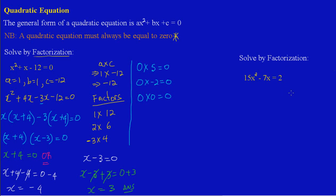Let's get into this question. We have 15x squared minus 7x equal to 2. If you note carefully, this is a quadratic equation because the highest power of the variable is 2. However, it's not looking like the standard form we worked with before. A quadratic equation must always be equal to 0, so since it's not equal to 0, we're going to have to transpose to equate it to 0.